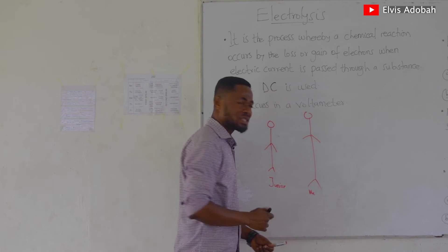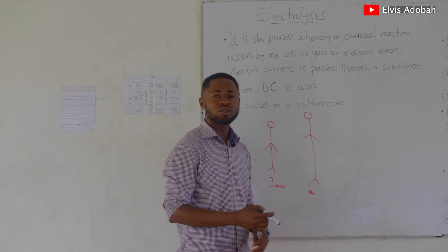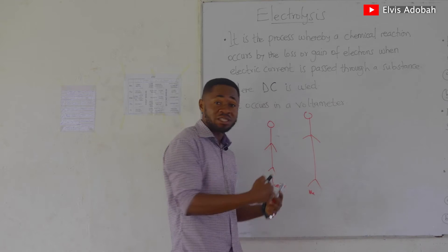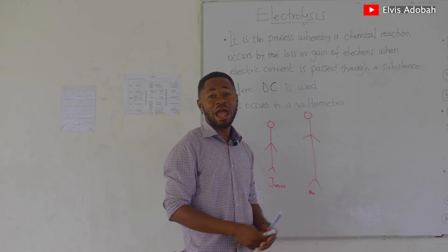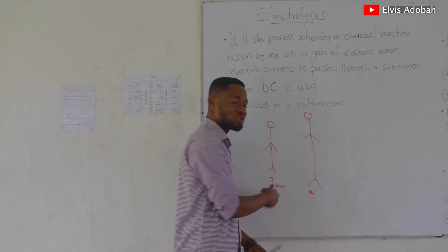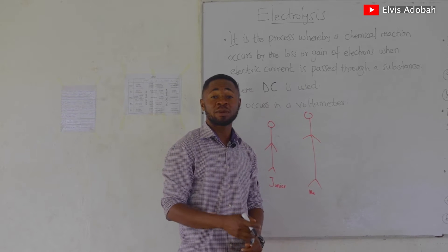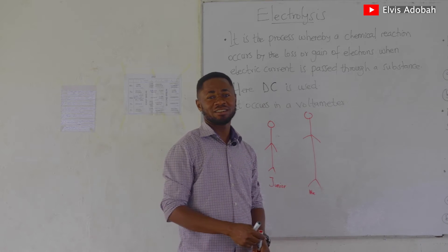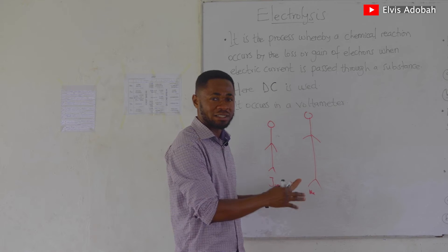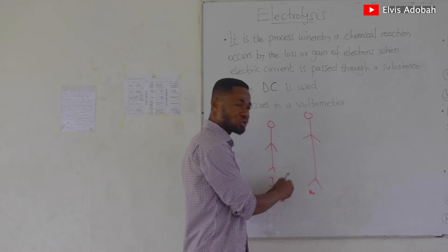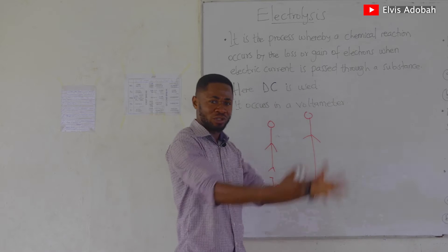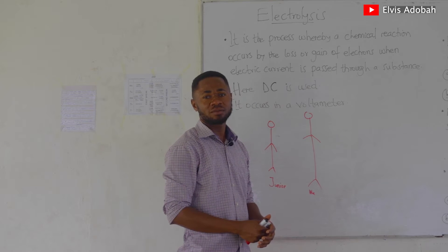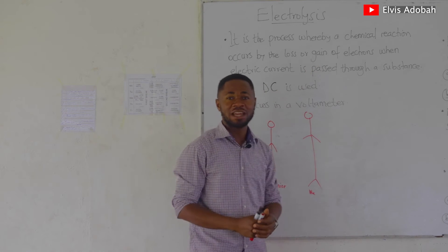One day I gave Junior biscuits, then I told Junior I was hungry and asked him to give me some of the biscuits back. But Junior said no — I begged and begged yet Junior didn't want to give me the biscuits. So Junior's mother came in, took the biscuits from Junior and gave them to me. This is a classical example of an electrolytic cell — Junior is supposed to give me electrons or biscuits but feels reluctant, so the mother — direct current — comes to force Junior to give me the biscuits. That is what really happens in electrolysis.